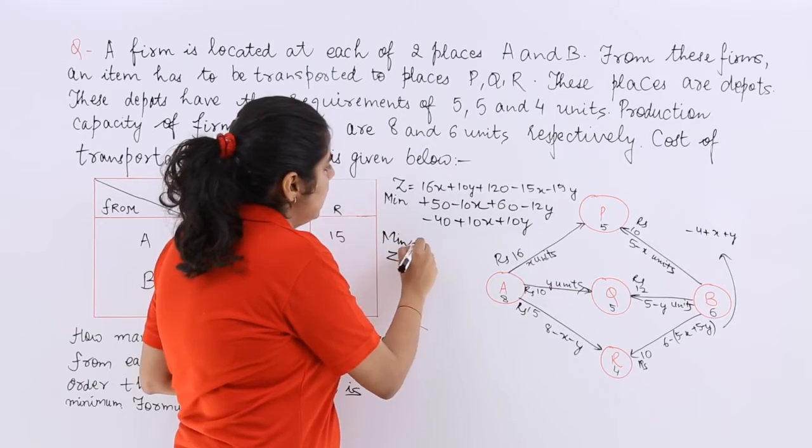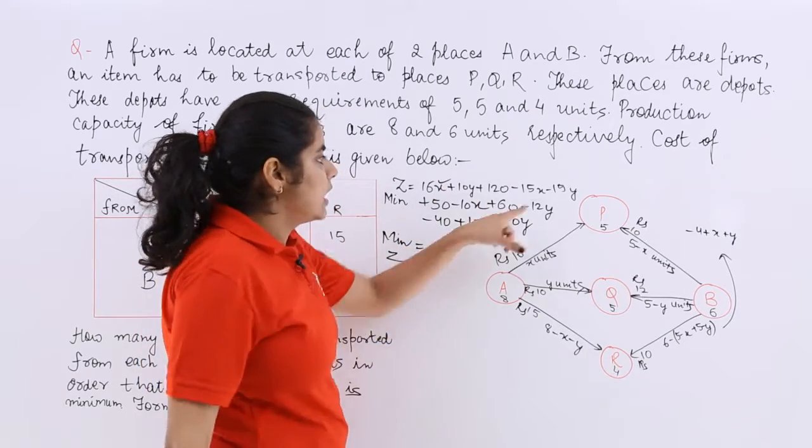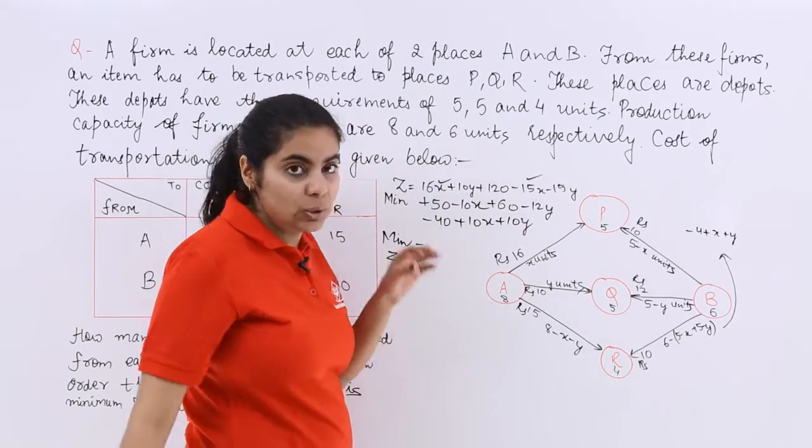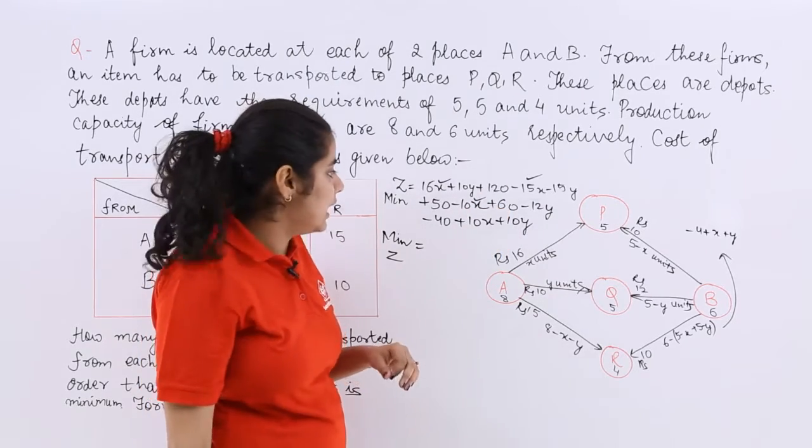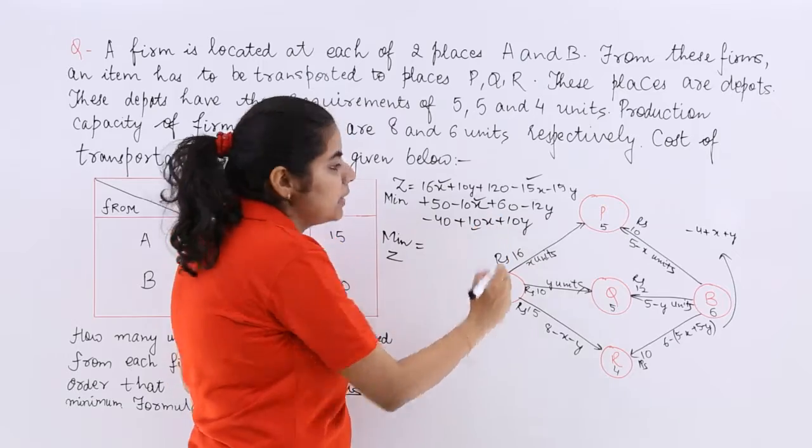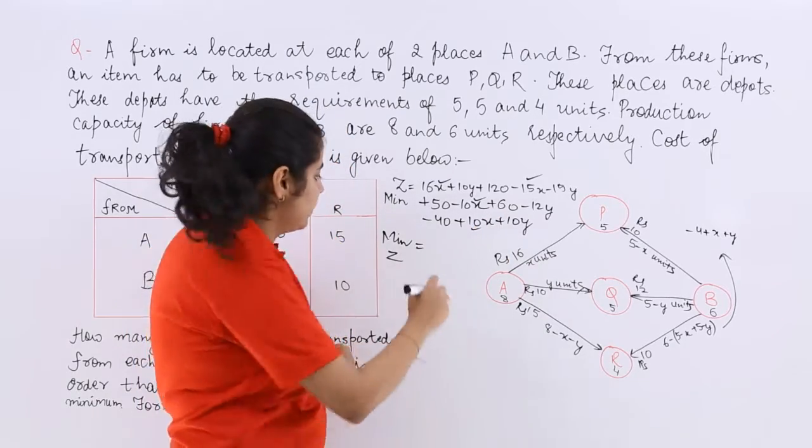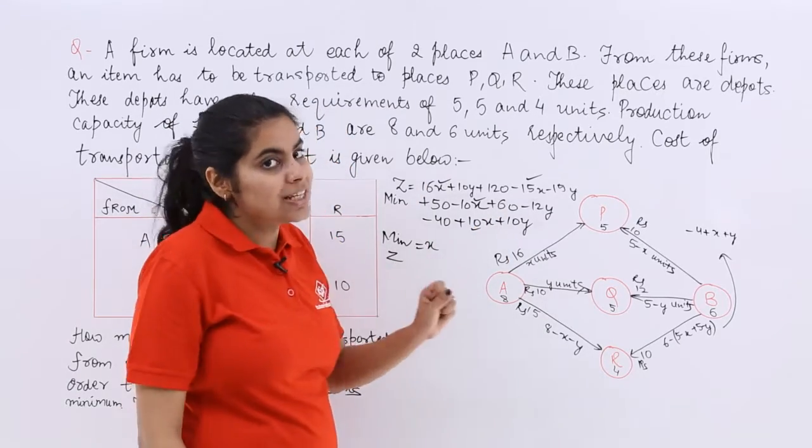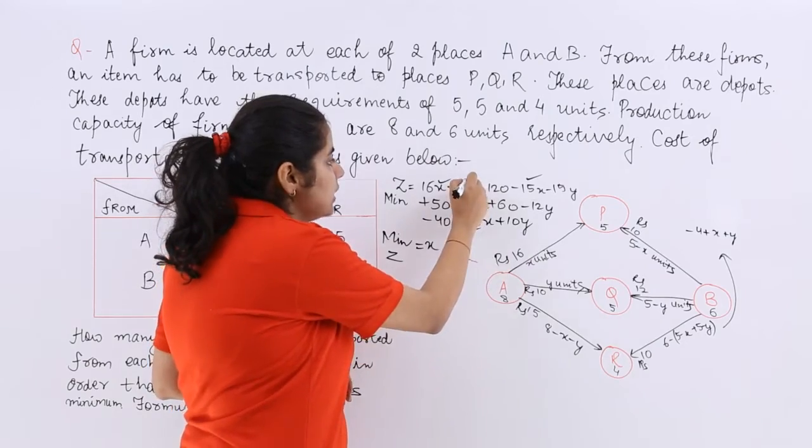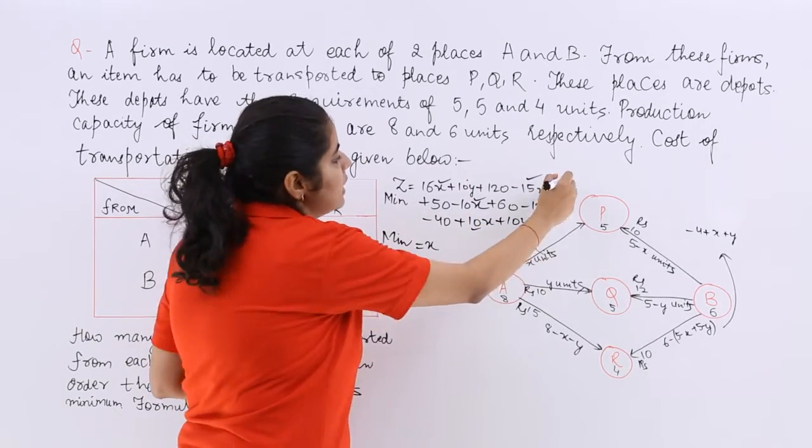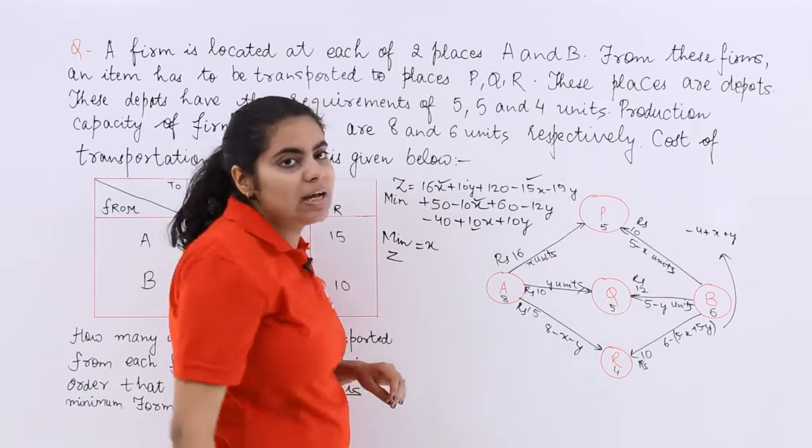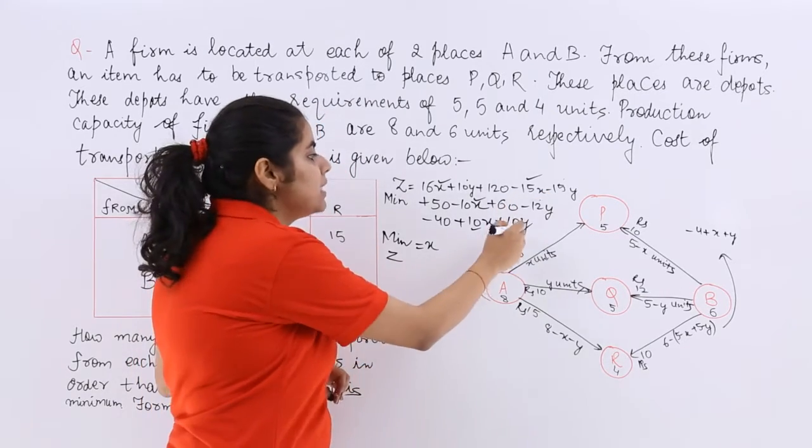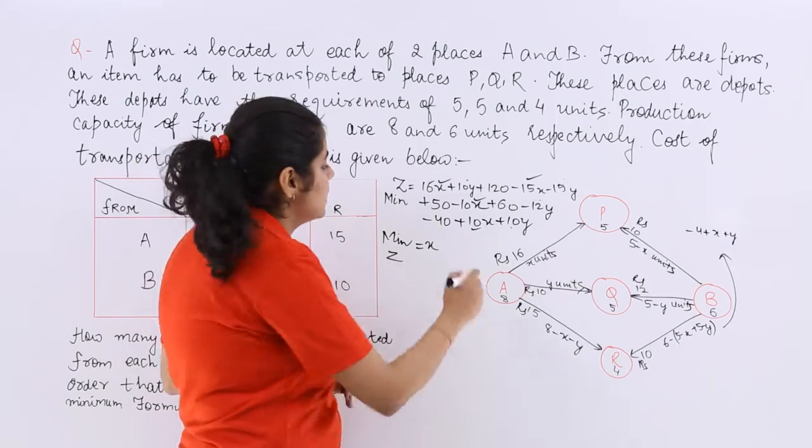So the final Z is 16X. Here is 15X which makes it only X. X minus 10X is minus 9X. Minus 9X plus 10X is again X. So it is X. Let's move to the Y factor. This is 10Y. 10Y minus 15Y is minus 5Y. Minus 5Y minus 12Y is minus 17Y. Minus 17Y plus 10Y is minus 7Y.